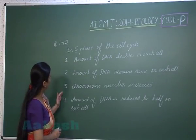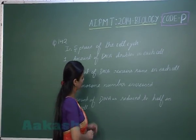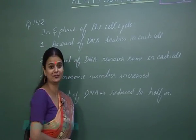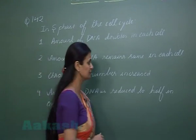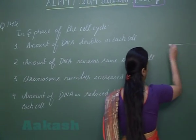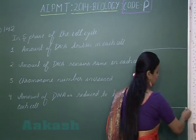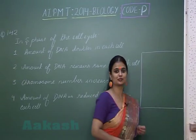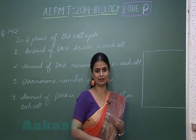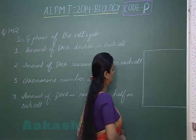Question number 142: In S phase of the cell cycle, we have to see which of the following events occur. In interphase, there are three phases: G1, S, and G2 phase.